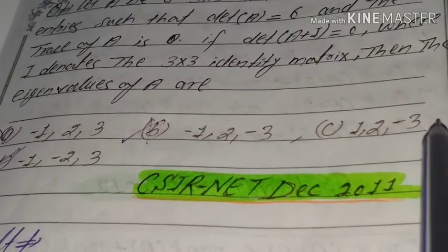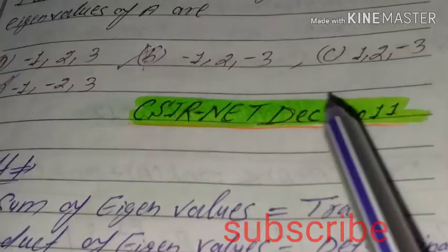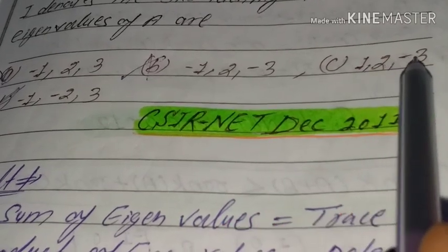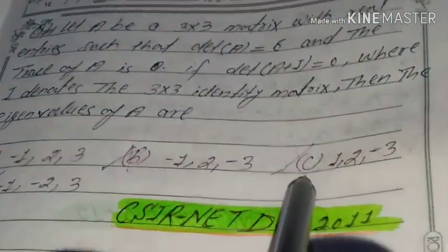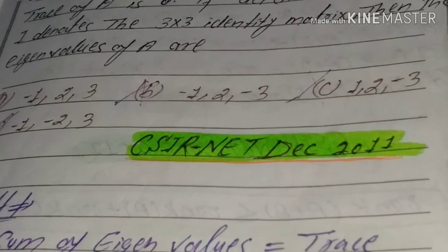3 minus 3 will be 0 but the determinant multiply 2 minus 6, this will be discarded. Fourth option correct, thanks friend.